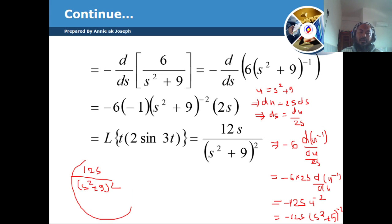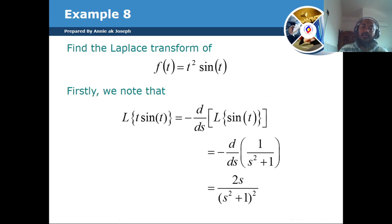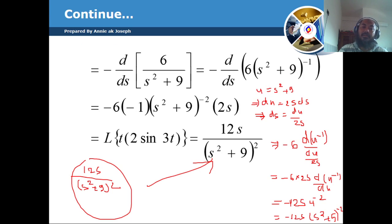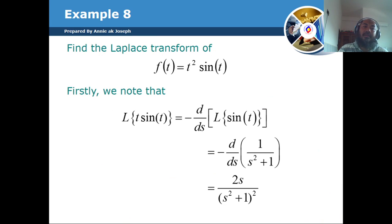So the result we get is 12s divided by (s squared plus 9) squared. Now for the next problem: find the Laplace transform of f(t) equals t squared times sin(t).